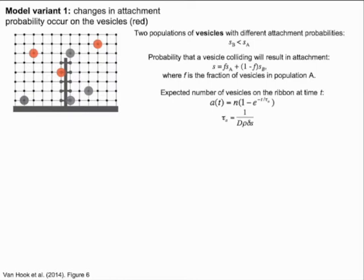Thus, the probability that a vesicle colliding with the ribbon will result in attachment is a weighted average of the individual attachment probabilities. In this scenario, the number of vesicles on the ribbon at a given time is governed by a single time constant. And, if calcium and calmodulin change the fraction of vesicles in each population, it will simply change that time constant.